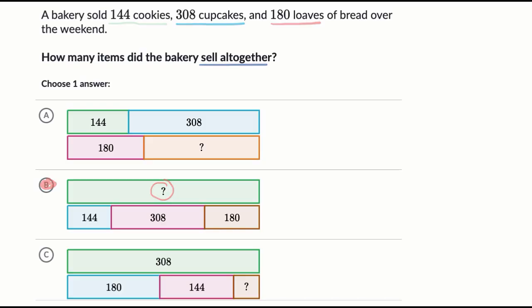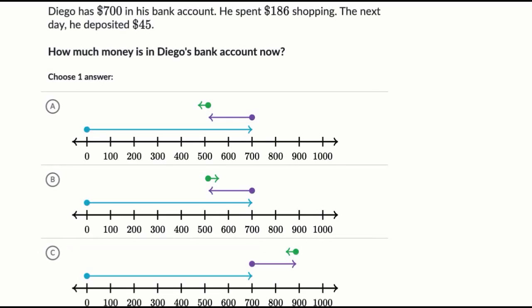Let's do another example here. So now we are told that Diego has $700 in his bank account. He spent $186 shopping. The next day he deposited $45. That means putting money back into the bank account. How much money is in Diego's bank account now?